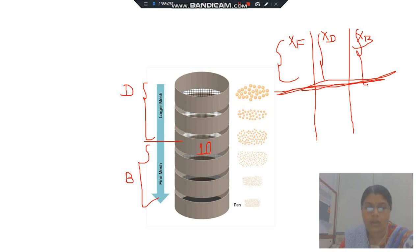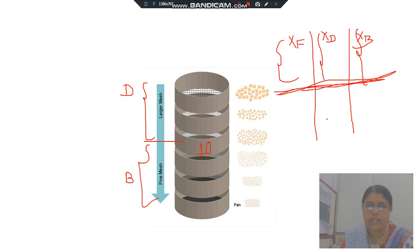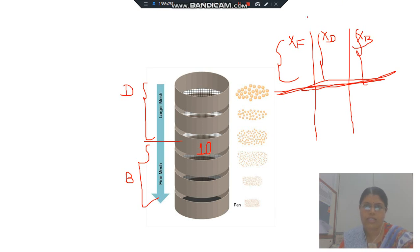For the 10 mesh screen, up to 10 mesh, what I collect gives me XF, XD, and XB. If I consider an ideal screen, ideally XB should be 0 because the material has passed through the 10 mesh screen, so no oversize material should appear in the underflow. The value of XD — the oversize material retained on the screen — should ideally be 0 below the 10 mesh. But if it does not behave as an ideal screen, we get some small fraction on each screen.